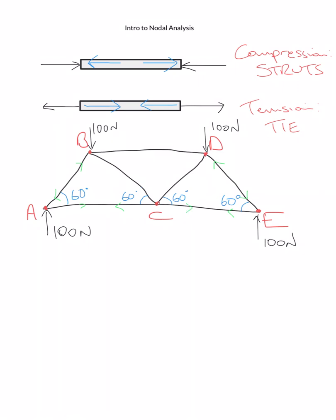We can apply the same reasoning symmetrically to DE and CE as well. For some members it's a 50-50 guess — you can ask: if that member disappeared, what would happen? If member AB was taken away the structure would squash down, confirming it's a strut. For the ones in the middle it's harder, but that's okay — just make an educated guess. If we get the wrong direction, we'll just get a negative answer, which tells us we were wrong.